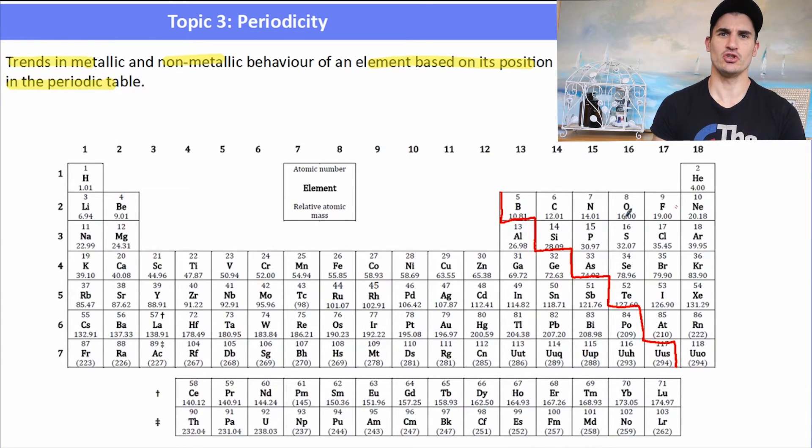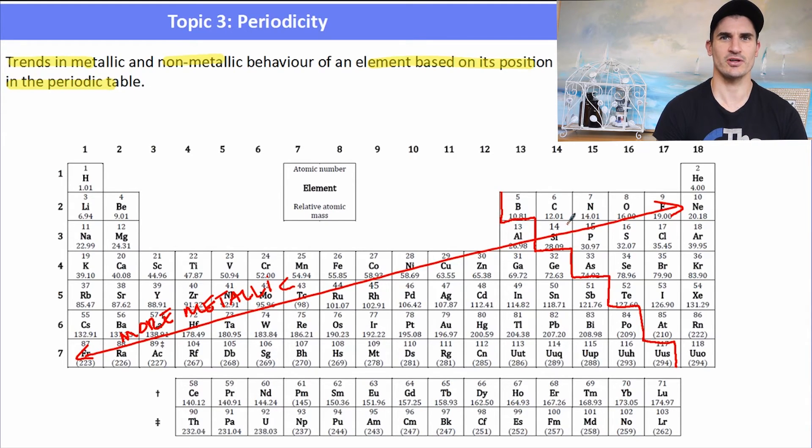Fluorine is the most non-metallic element, up there in the top right-hand corner. Francium is described as the most metallic element. So we have this spectrum or continuum of more metallic to less metallic based upon where they sit on the periodic table. Essentially, the further to the left and the further you go down the periodic table, the more metallic you're said to be. And as you move to the right and go up, the less metallic you're said to be.